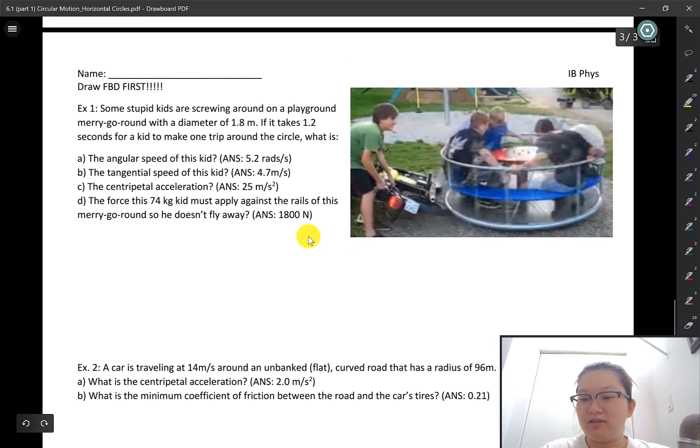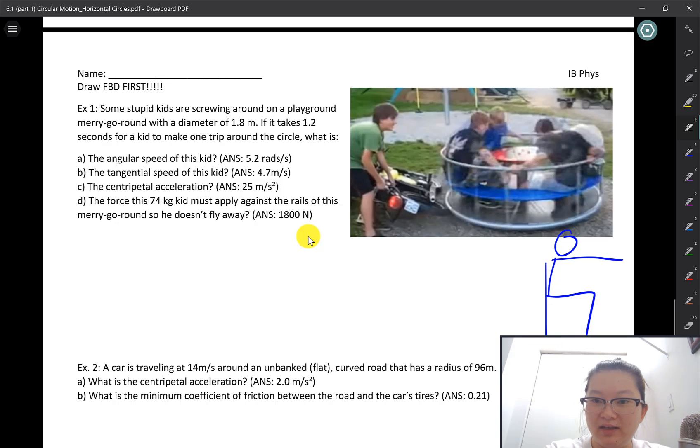Let's get started with these examples. Example one: I have some kids screwing around in a playground merry-go-round with a diameter of 1.8 meters. I'm gonna draw part of the merry-go-round here and then have some kids sitting over here. The diameter of this one, I'm only gonna draw the radius because imagine this is me cutting it in half, which half of 1.8 meters is 0.9 meters. It takes 1.2 seconds for this kid to make one full trip around the circle, which means this number in seconds is the period of the rotation.